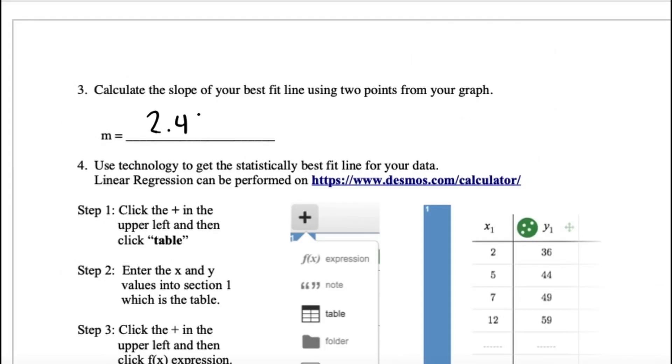So, to do linear regression, you go to a new field. And you have to type in this command into Desmos. There's y1 tilde mx1 plus b. And what it's going to do is it's going to find the statistical best fit line between your data points. At the bottom, it's going to give you a m value, which is the slope, and a b value, which is your intercept. So, just transfer those to your paper.